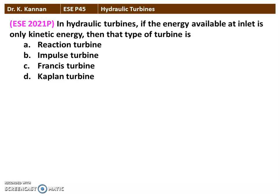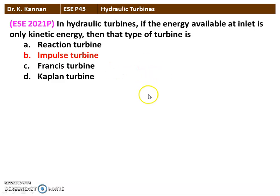The next question from the 2021 question paper: in a hydraulic turbine, if the energy available at the inlet is only kinetic energy, then that type of turbine is called an impulse turbine. The Pelton wheel is the example of the impulse turbine, where the jet of water issuing from the nozzle hits the bucket, transferring kinetic energy. The answer is impulse turbine.